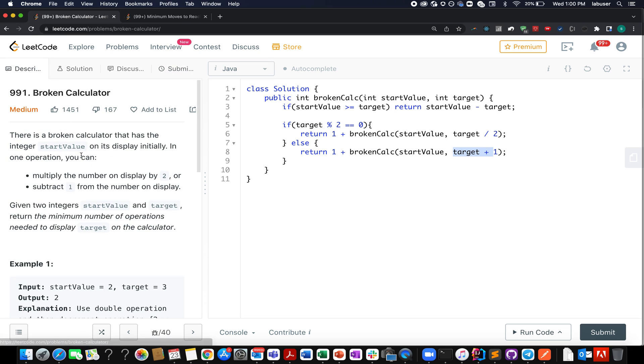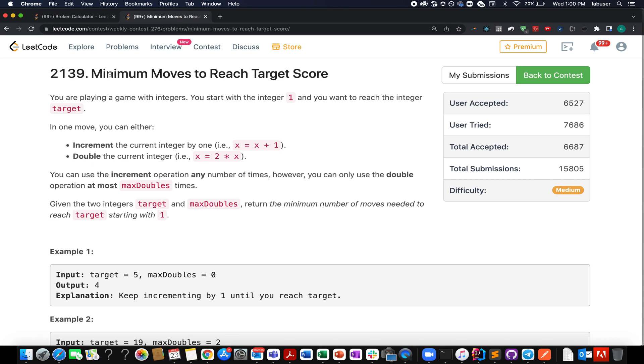Also, if you are looking for another question on similar lines, then this one is for you. 2139. Here again in this question, you are given a starting integer. You are given a target integer. You have to perform operations and with each operation, you can either increment the value by 1 or double the current value. Also, you are given the total number of times max double operations can be performed. So, I am attaching the link to this question as well as the video solution for this. Do give it a shot. It will act as a revision opportunity for all of you.